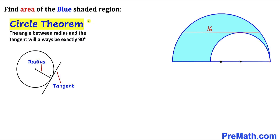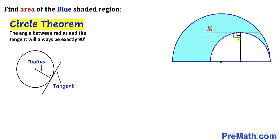Let's recall the circle theorem. The angle between the radius and the tangent will always be 90 degrees, as you can see in this diagram where this is our radius and this is our tangent line. So therefore the radius for this smaller semicircle is perpendicular to this chord, and this angle is 90 degrees.